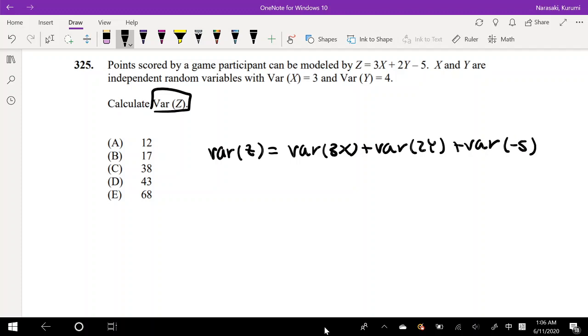And we know what variance of X is, so we just have to take that coefficient out. Something you just have to remember is you have to make sure to square it. So it becomes 9 times variance of X plus 4 times variance of Y.